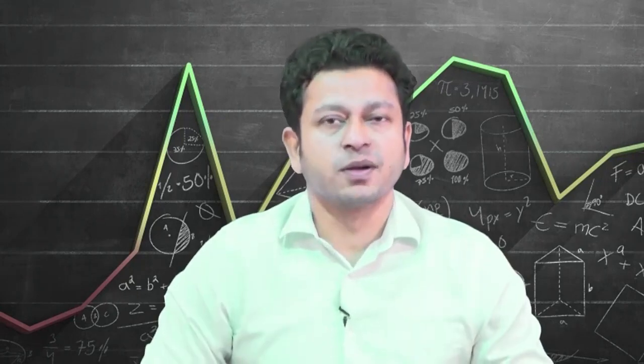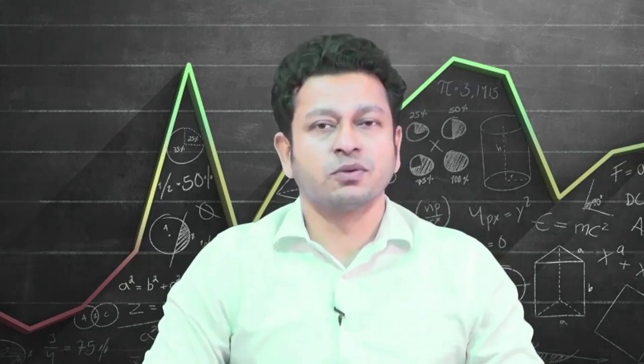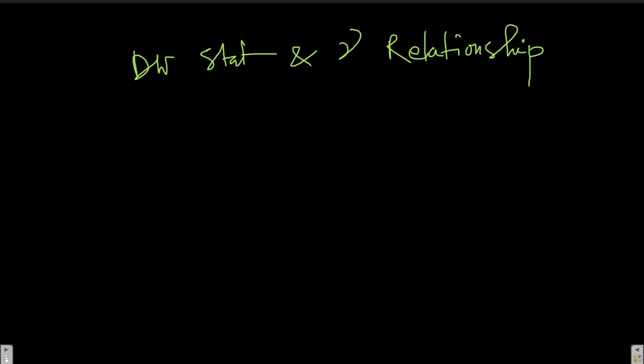Hello and welcome back to the lecture on applied econometrics. In this lecture we are going to talk about autocorrelation and in that context we explained Durbin-Watson's statistic and how it helps us to identify positive and negative autocorrelation.